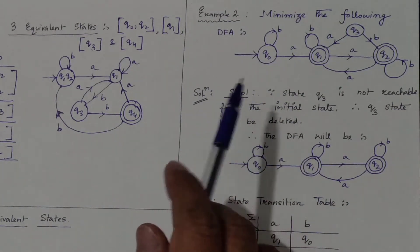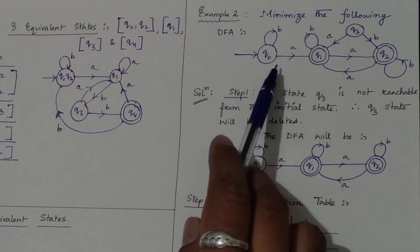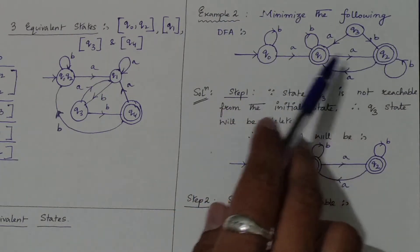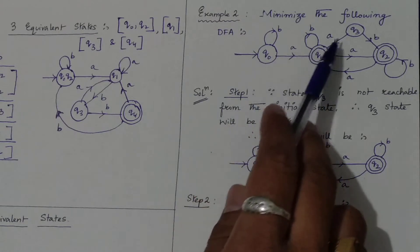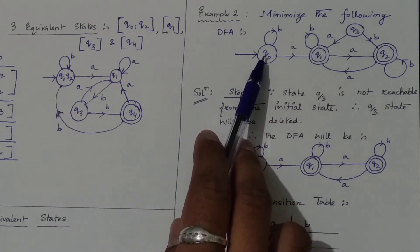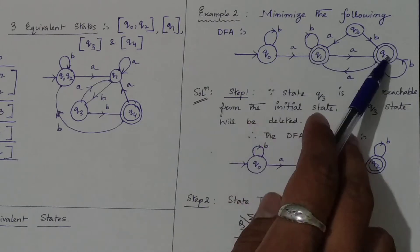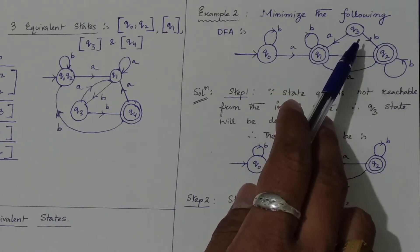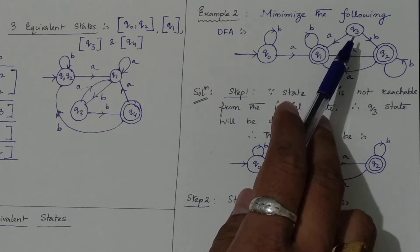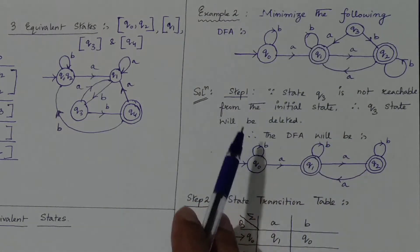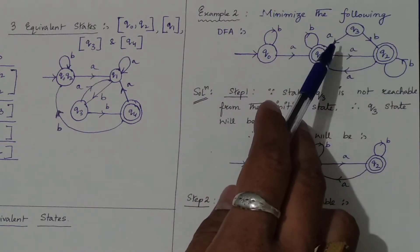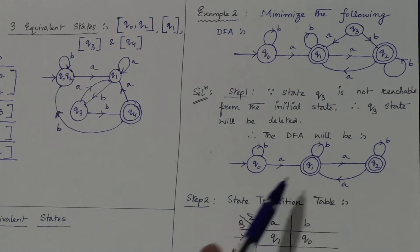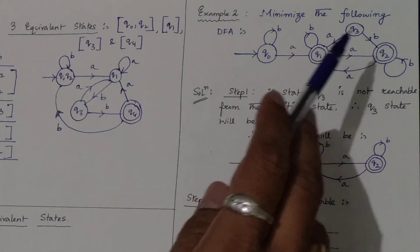From q0, we can reach q1 through a transition, and from q0 we can reach q2 through q1. But if we check q3, it is not possible to reach it from q0, because from q3 only transitions are going out — none are coming in. Therefore, we can delete q3 according to step one. After deleting this state, the transitions associated with it will also be deleted.